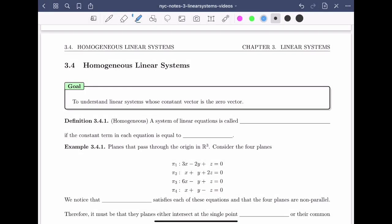Welcome back. In this video, we start section 3.4 on homogeneous linear systems. The goal of this section is to understand linear systems whose constant vector is the zero vector. Definition 3.4.1: A system of linear equations is called homogeneous if the constant term in each equation is equal to zero.